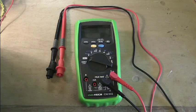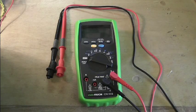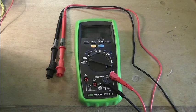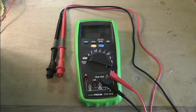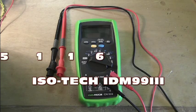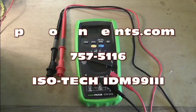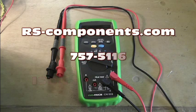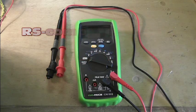So that was the Isotec IDM99III and as far as I'm concerned it's a really nice multimeter and for me it's definitely a keeper. You can get one of these from RS Components and the stock number is 7575116 and I believe they go for about 125 pounds.